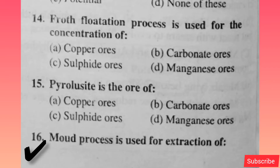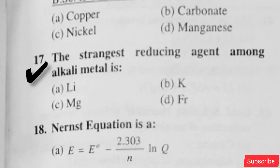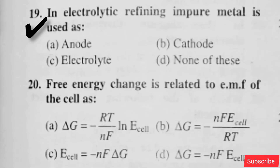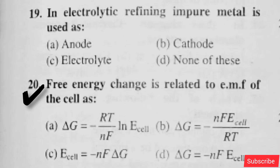Ferulicide is the ore of — option C is right. Mod process is used for the extraction of — option C is right. The strongest reducing agent among alkali metals is — option A is right. Nurse reduction is — option D is right. In electrolytic refining, impure metal is used as — option A is right.